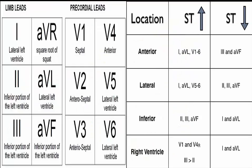Leads 2, 3, and AVF reflect the inferior area of the heart and the ST segment changes. It could also be mitral regurgitation. Lead 2 will best capture any electrocardiographic changes that indicate further damage to the myocardium. V3 and V4 are associated with cardiogenic shock.